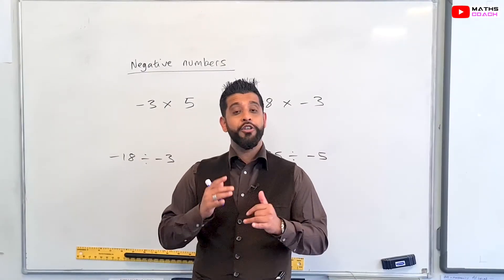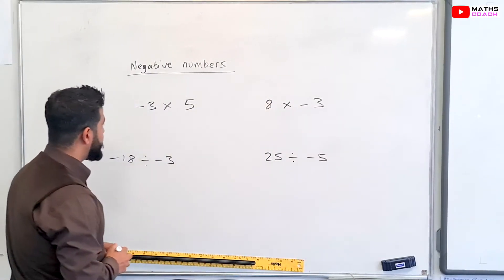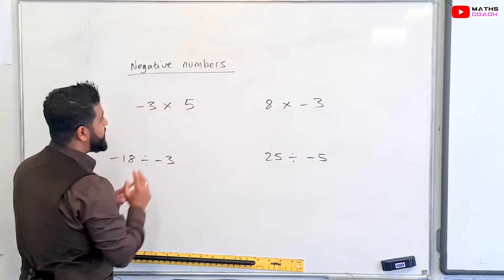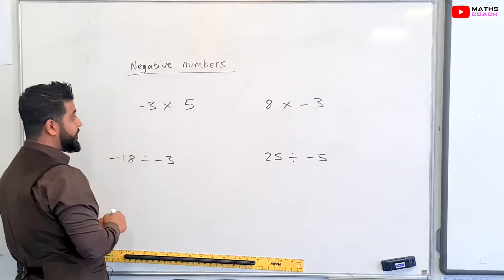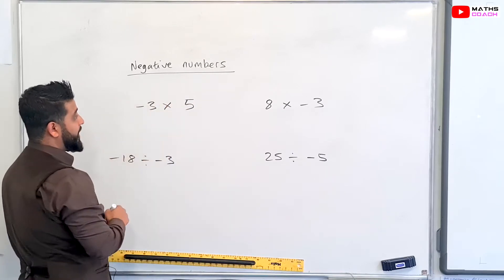So onto multiplication and division now, four more questions for you. So let's start with our first question, minus three times by five. And this is a positive five. So negative times by a positive.